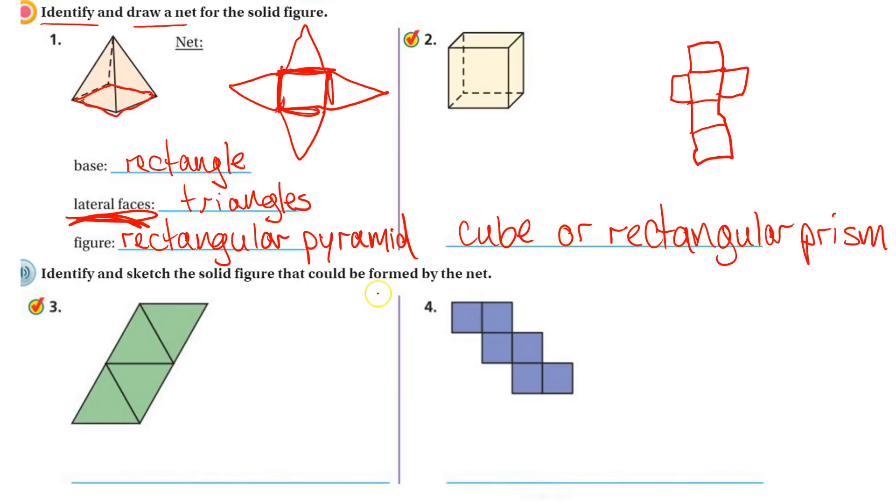Identify and sketch the solid figure that can be formed by the net. So here's our net. Notice all the shapes are triangles. Since it's got all those triangles, we know it is a triangular pyramid.